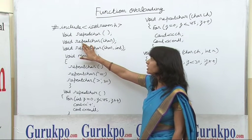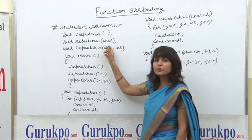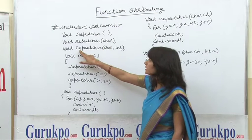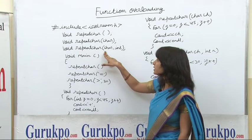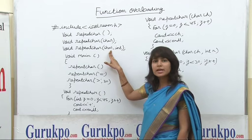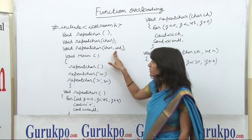the second is void repeat_character with a single argument of character type, and the third is void repeat_character with two arguments — one is character type and the second is integer type.